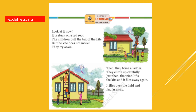But the kite does not move. They try again. Then they bring a ladder. They climb up carefully. Just then, the wind lifts the kite and it flies away again. It flies over the field and far, far away.